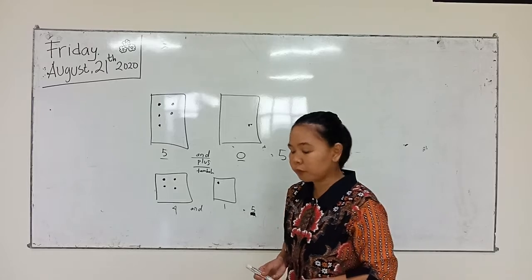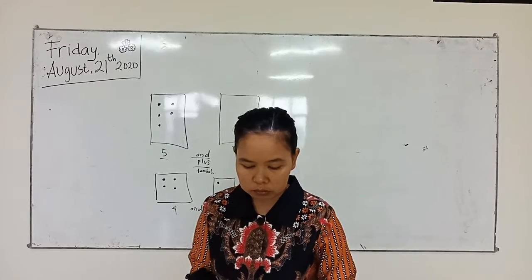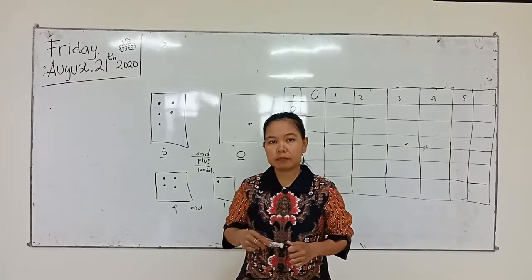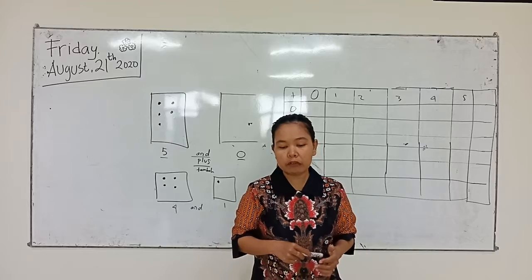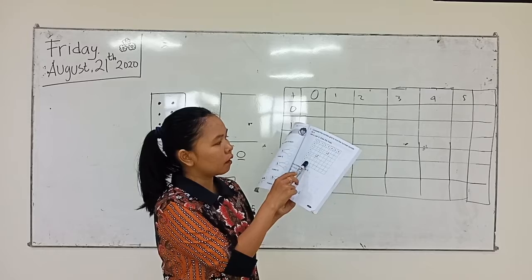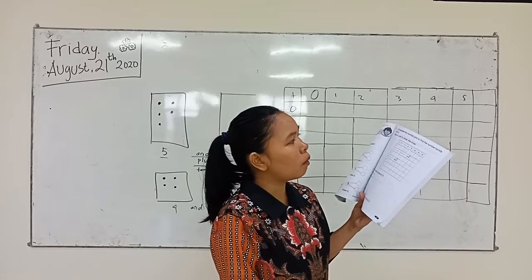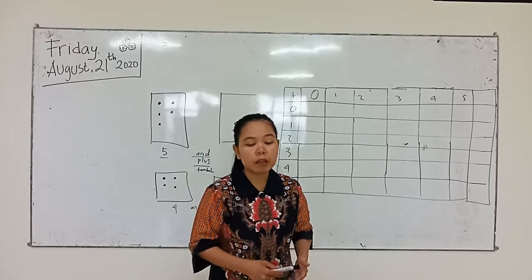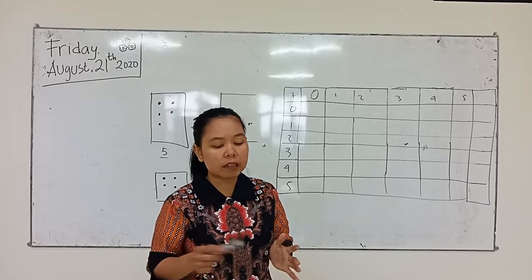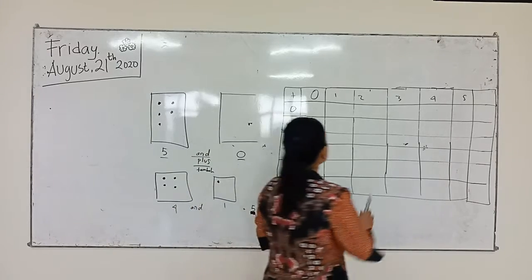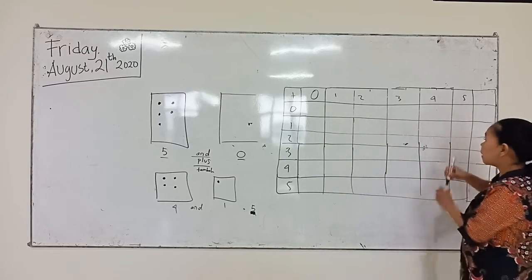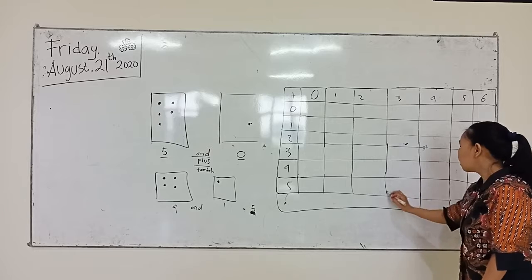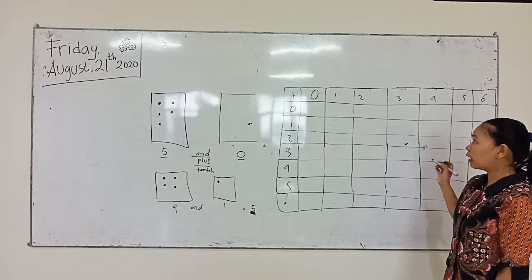Lalu halaman 27. We move to page 27. Look at the table. Complete this number to find the number. Use the ruler to draw the lines. Maksudnya disini: nomor berapa yang akan membentuk angka lima dengan garisnya menggunakan penggaris. Misalnya ada tabel dari 0 sampai 6.